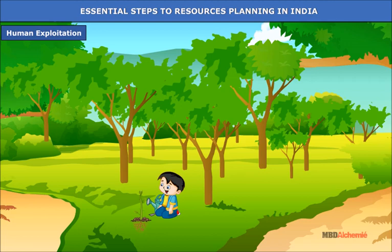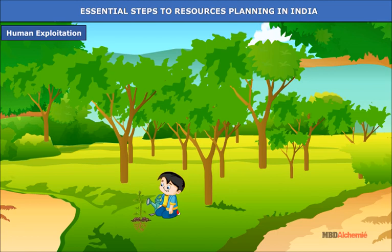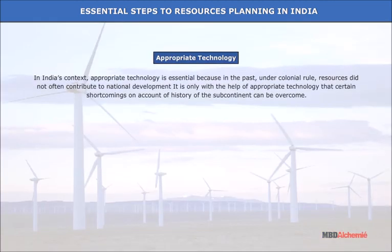For example, forest resources will need more conservation measures than exploitation. In India's context, appropriate technology is essential because under colonial rule, resources did not often contribute to national development. It is only with the help of appropriate technology that certain shortcomings due to the history of the subcontinent can be overcome.